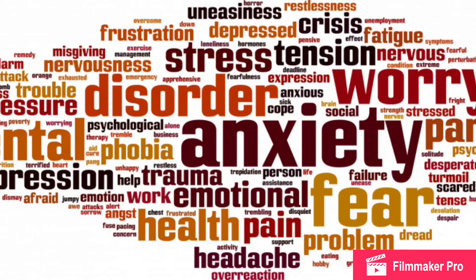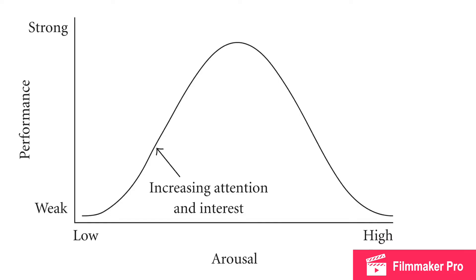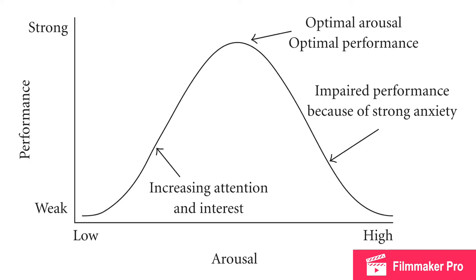Levels of anxiety and levels of trauma witnesses go through strongly impacts the validity of their statements. The Yerkes-Dodson Law is an empirical relationship between arousal and performance, originally developed by psychologists Robert M. Yerkes and John Dillingham Dodson in 1908. The law dictates that performance increases with physiological or mental arousal, but only up to a point. After the break in the curve, the level of anxiety will impair performance, which is often the case in eyewitness misidentification.